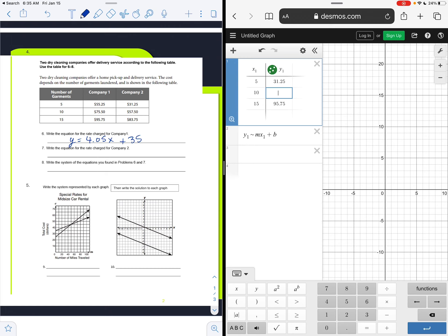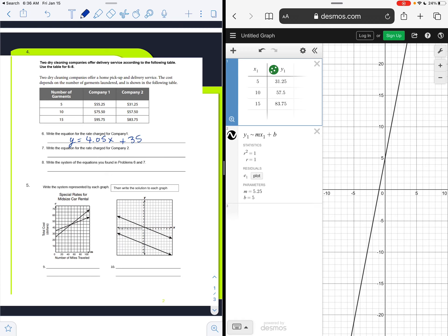Alright, and feel free to do this with me. 57.5, and then 83.75. Alright, now that we're finished, we have a new equation down here. If you notice, it says now that our slope is 5.25 and our y-intercept is 5. So this is y equals 5.25x plus 5.